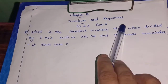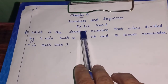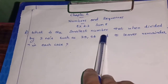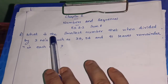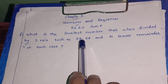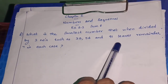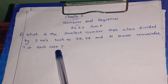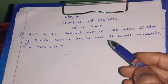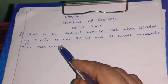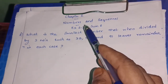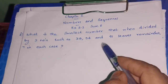Chapter 2, Numbers and Sequences, Exercise 2.2, Sum 8. What is the smallest number that when divided by 3 numbers — 35, 56, and 91 — leaves a remainder of 7 in each case? We have to find the smallest number, but that number must be divisible by all 3 numbers.